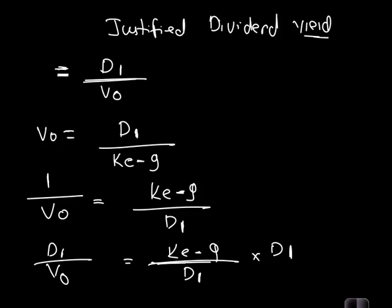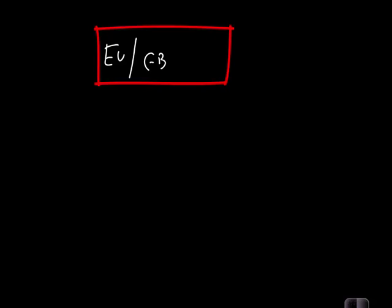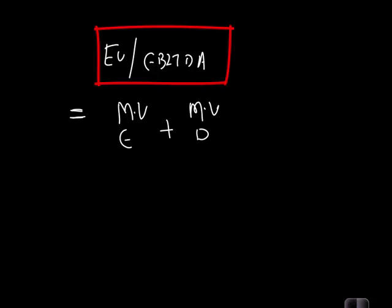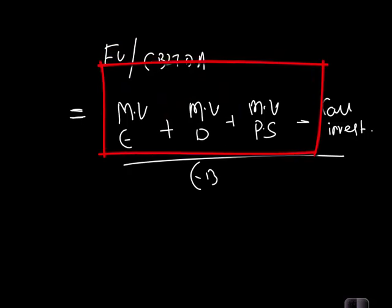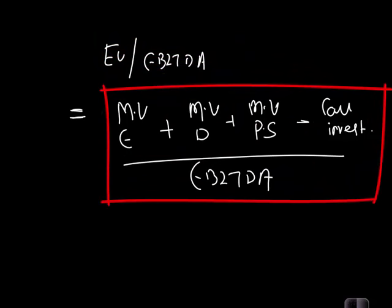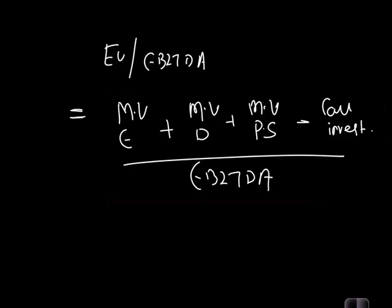Toward the end of the reading, there is discussion on the EV/EBITDA multiple. Enterprise value is calculated as market value of equity plus market value of debt plus market value of preferred stock minus cash and non-operating investments. This approximates the market value of the firm's operating assets. EV as a ratio to EBITDA tells us how many times the market values operating assets relative to operating cash profit. There is also theory on the advantages and disadvantages of each multiple and when to use which.